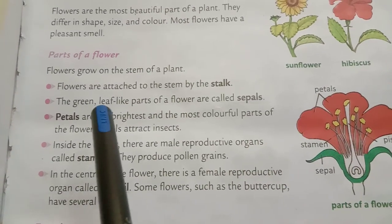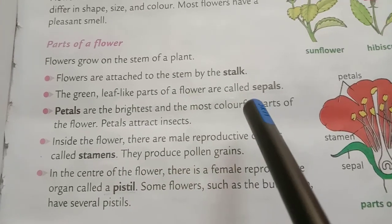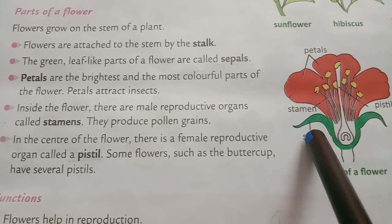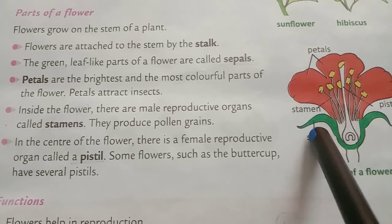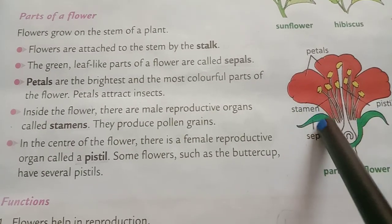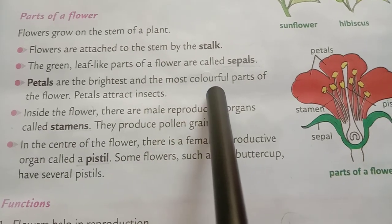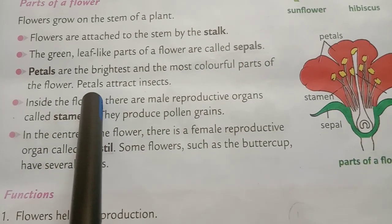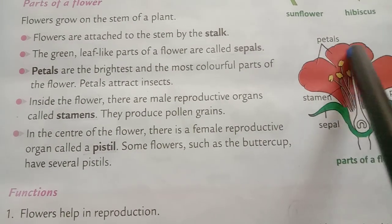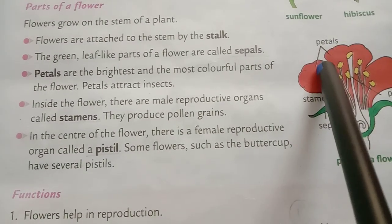The green leaf-like parts of a flower are called sepals. You can see the picture. Petals are the brightest and most colorful parts of the flower. These are called petals, and petals attract insects.